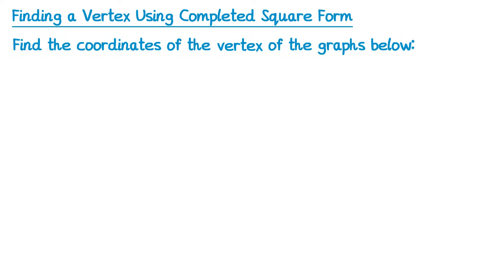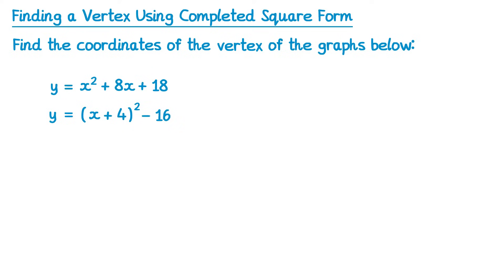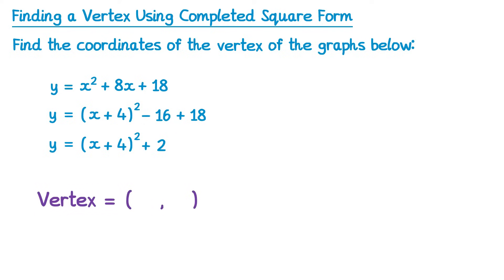Now let's try two full questions. The first graph is y equals x squared plus 8x plus 18. We leave the left-hand side as y and complete the square on the right: y equals (x + 4)² — halving 8 gives 4, square it and subtract, so take away 16, and keep the 18. Simplifying: negative 16 plus 18 gives plus 2, so y = (x + 4)² + 2. The vertex is the opposite sign of 4, which is negative 4, and then 2: vertex (−4, 2).